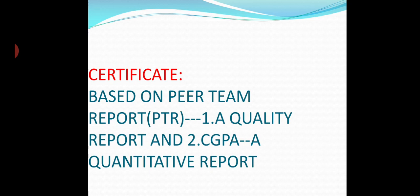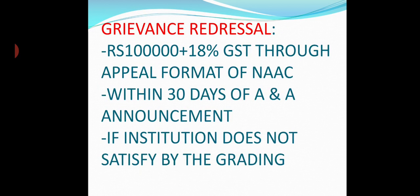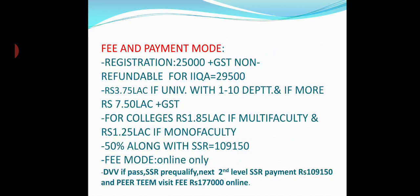The sub-grade is based on qualitative and quantitative aspects. In the re-accreditation process, after cycle 1, the institution must go for cycle 2, 3, 4, etc. After cycle 1, IQAC and AQR submission is mandatory. For cycle 2, IIQA must be submitted 6 months before. If there are grievances, an appeal can be made within 30 days with fee payment. Fee payment mode is online, with separate fees for IIQA submission, SSR submission, and peer team visit. Fees differ for universities and colleges.